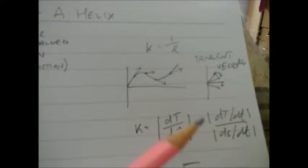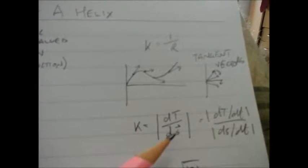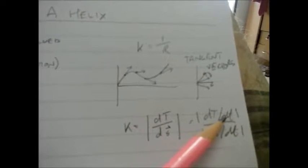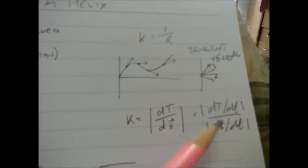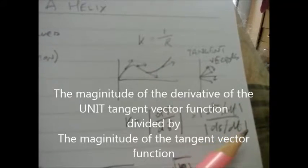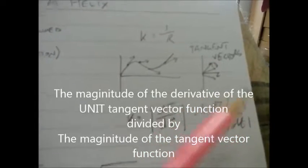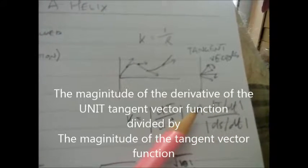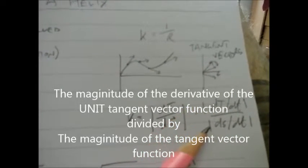I can rewrite that using a bit of chain rule manipulation as dT/dt, the tangent vector differentiated with respect to t, and dr/dt, the curve function differentiated with respect to t. That is the formula I'm really looking for. These lines here mean I want the magnitude of these vectors.